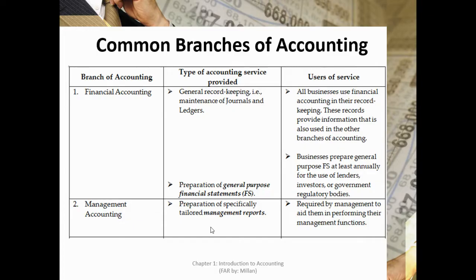These are the common branches of accounting. Financial accounting provides general record-keeping services, such as the maintenance of journals and ledgers, and the preparation of general-purpose financial statements. All businesses use financial accounting in their record-keeping, and these records provide information used in the other branches of accounting. Businesses prepare general-purpose financial statements at least annually for the use of lenders, investors, or government regulatory bodies.